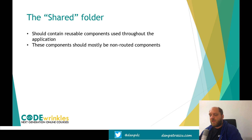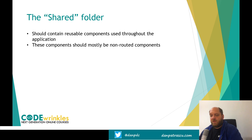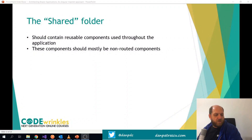Then there is the second very important folder: the shared folder. This should contain reusable components that are mostly non-routed - components we cannot navigate to directly. These could be things like buttons, lists, and layouts - elements we reuse as frontend elements in other components. Whenever we want a certain button or a dropdown list that looks a certain way, we know we find it in the shared folder.